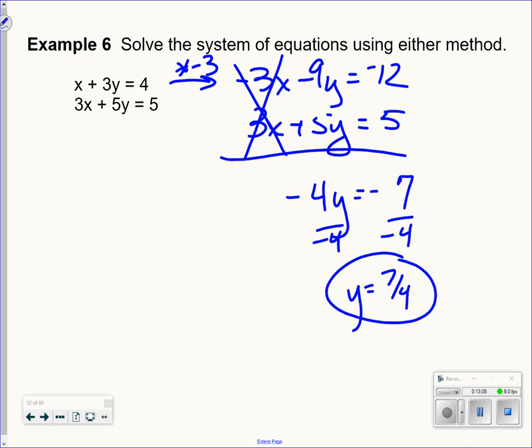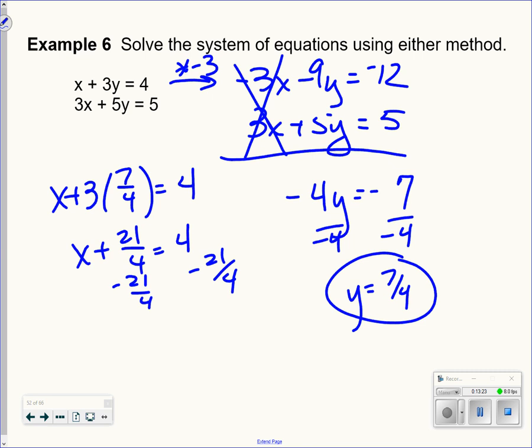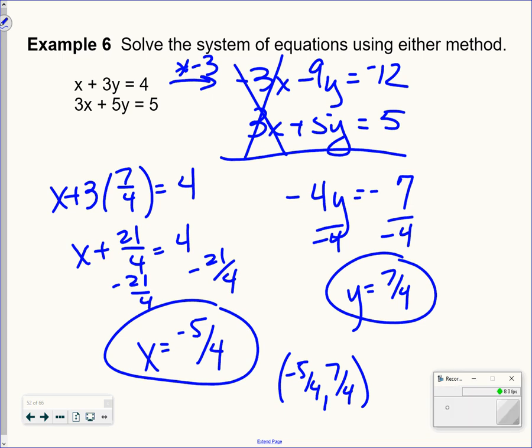Now, I'm going to put 7 fourths back in. So x plus 3 times 7 fourths equals 6. x plus 21 fourths equals 6. Subtract 21 fourths and get negative 5 fourths. So again, making this into a point. Negative 5 fourths for x, 7 fourths for y.